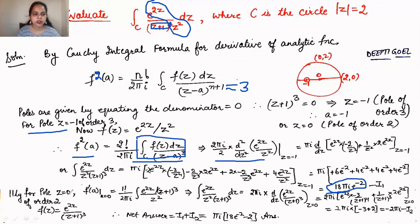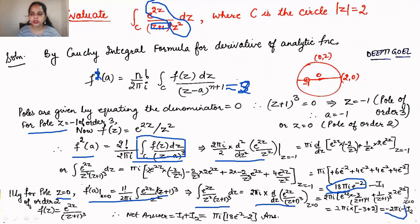Adding the two results: the total integral = I₁ + I₂ = 18πi·e^(−2) + (−2πi) = πi·(18e^(−2) − 2). This is the answer for this integral. Applying the Cauchy Integral Theorem and Cauchy Integral Formula, we can easily calculate integrals that would be very difficult otherwise.